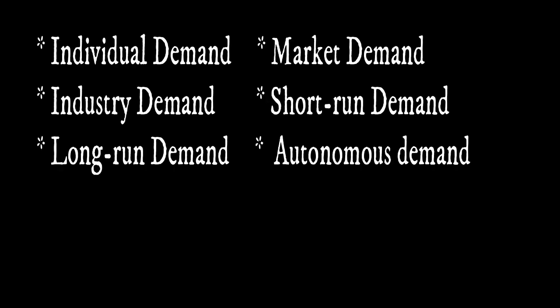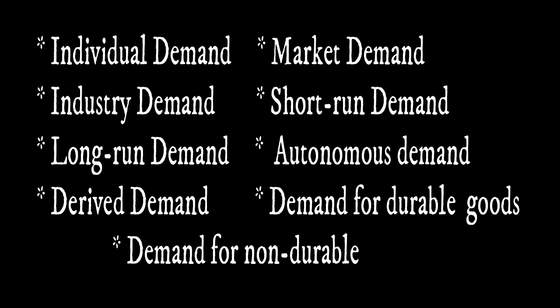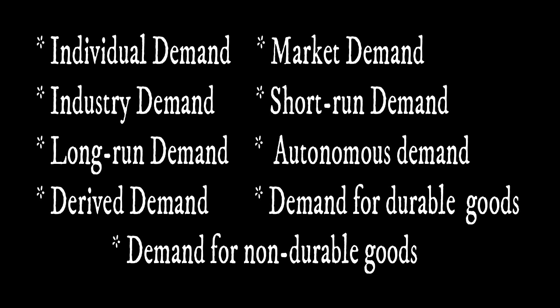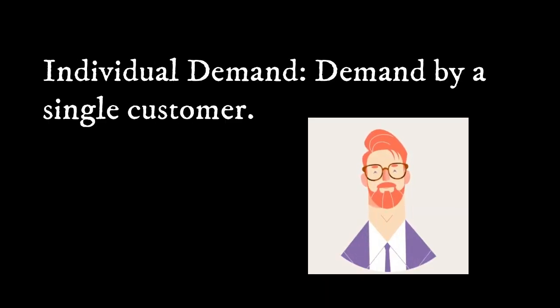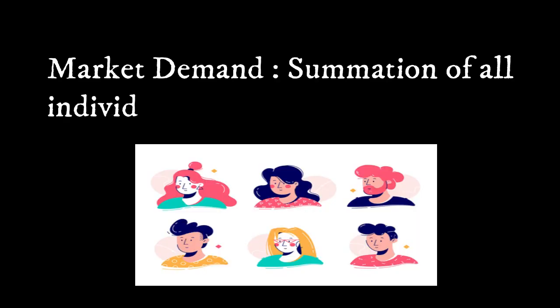Types of Demands: Individual Demand, Market Demand, Industry Demand, Short-run Demand, Long-run Demand, Autonomous Demand, Derived Demand, Demand for Durable Goods, Demand for Non-Durable Goods. Individual Demand refers to demand by a single customer. Market Demand is the summation of all individual demands.